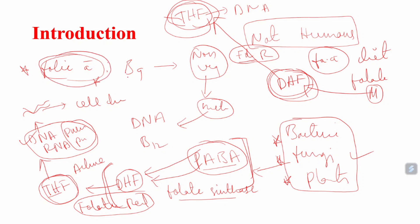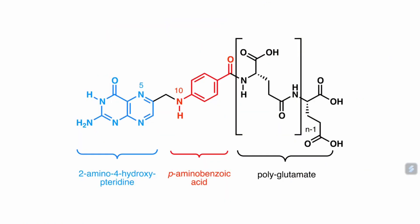This is the physiology of folic acid. Folic acid is the B9 vitamin — it is not synthesized by humans, but it is synthesized by bacteria, fungi, and plants. In humans, dihydrofolate cannot be synthesized from PABA — that is the important point to remember.